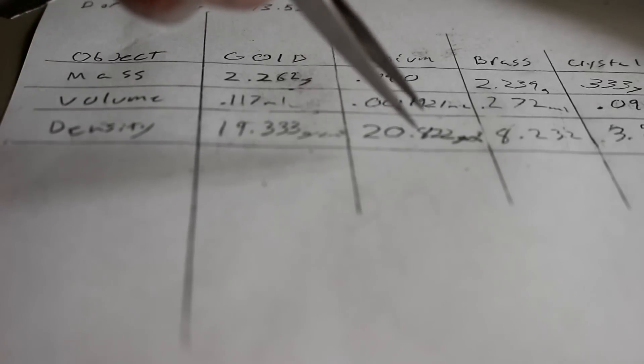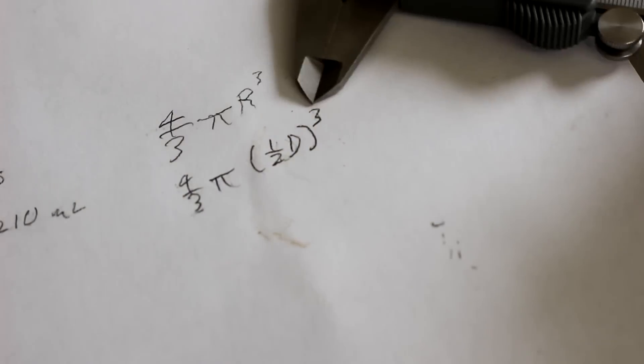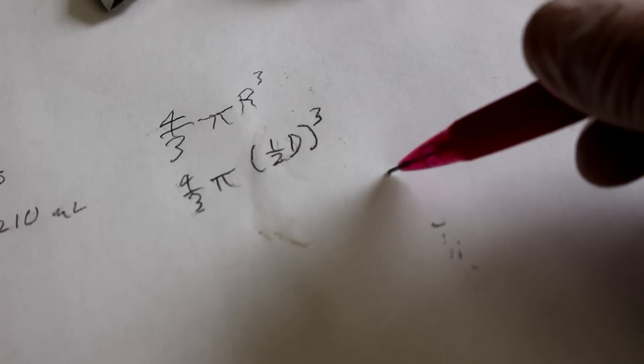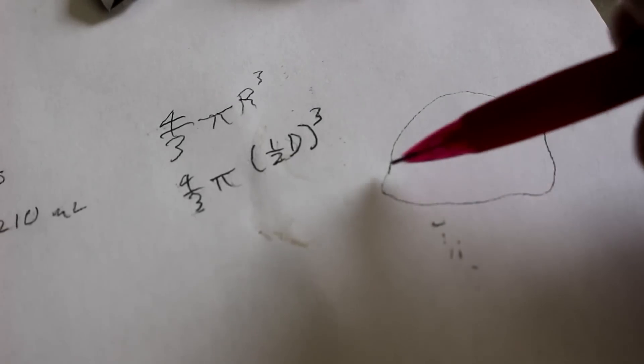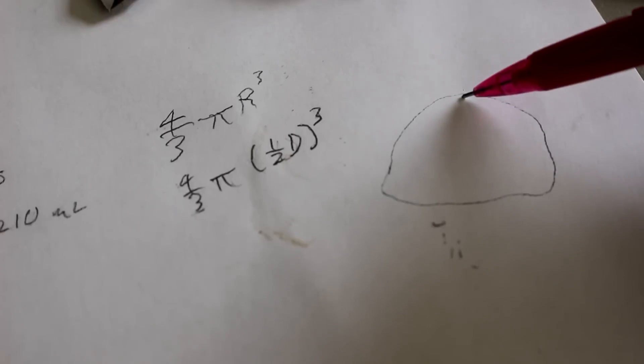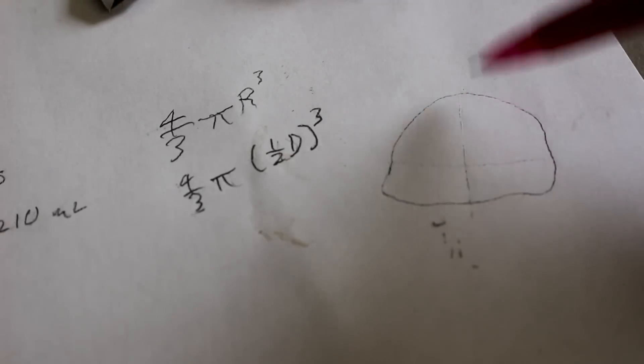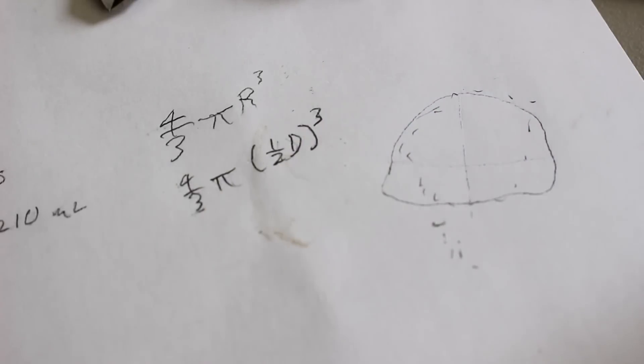If the bead was a perfect sphere it would be as simple as taking the diameter of it and plugging it into this equation. Unfortunately the bead is sort of shaped like this. See it's not a perfect sphere it's slightly flattened at the bottom. So what I need to do is take the measurement here and here and then average the two so that I can get something which is more of a sphere. All right, let's take the small diameter.